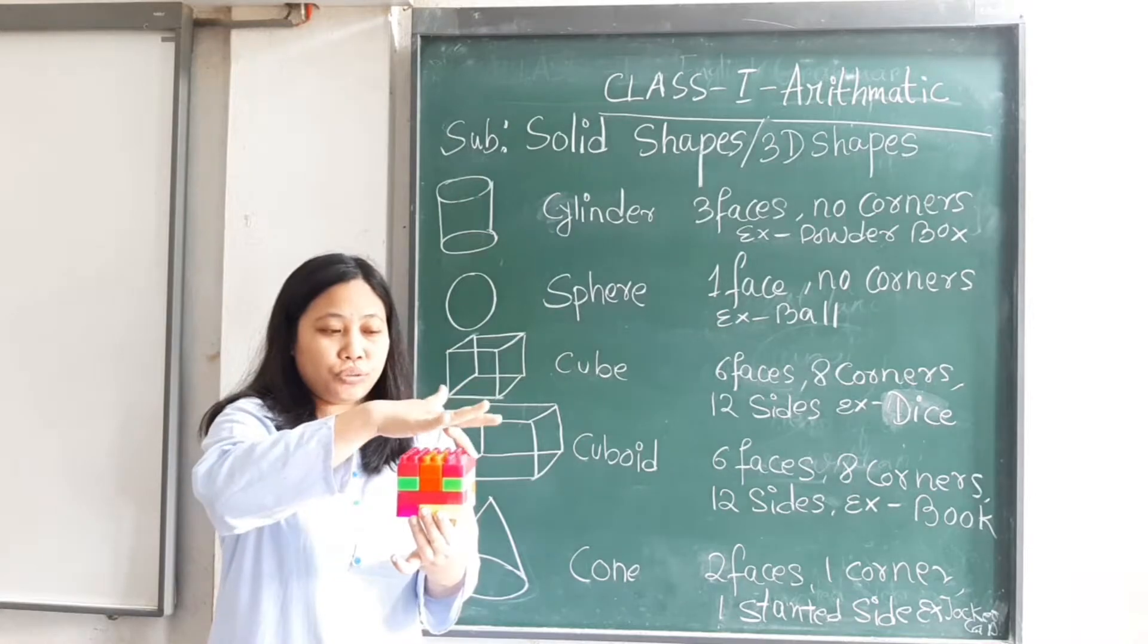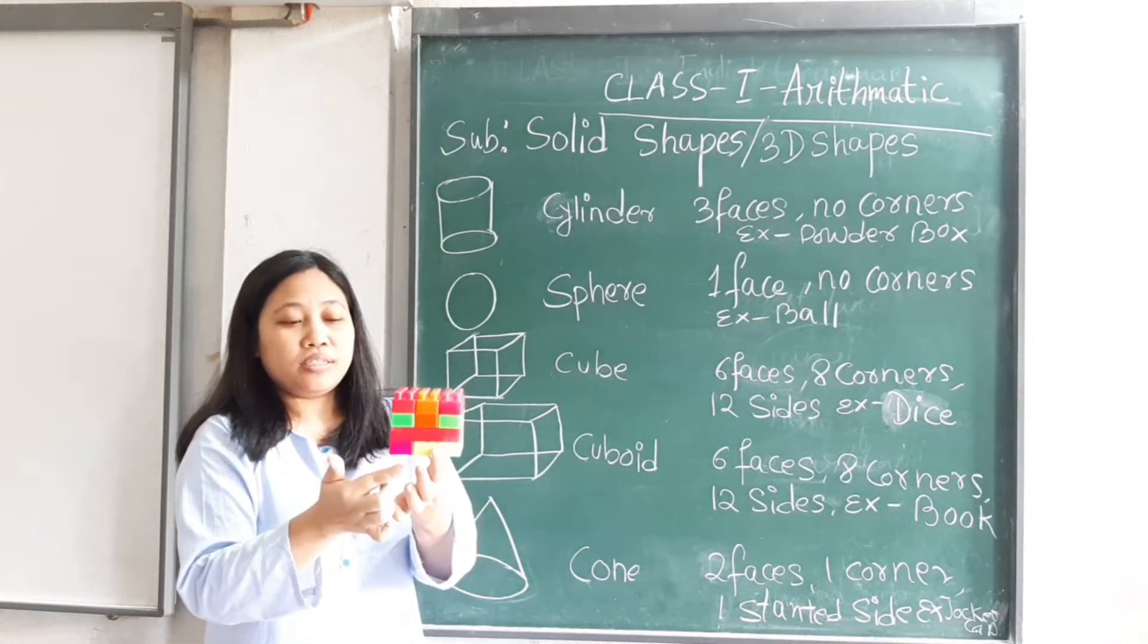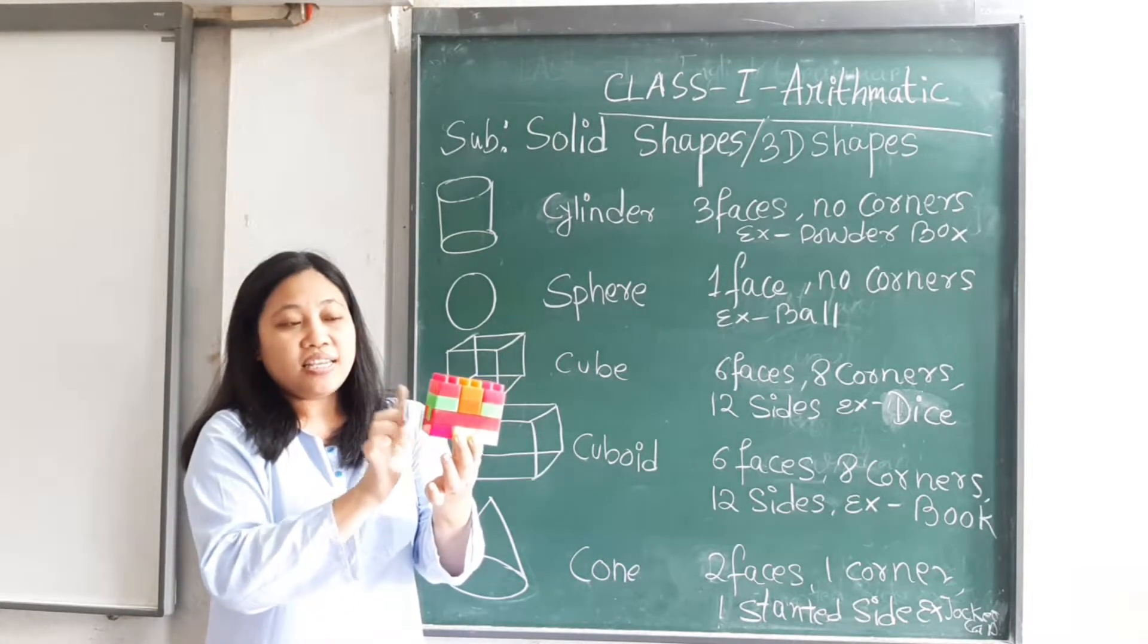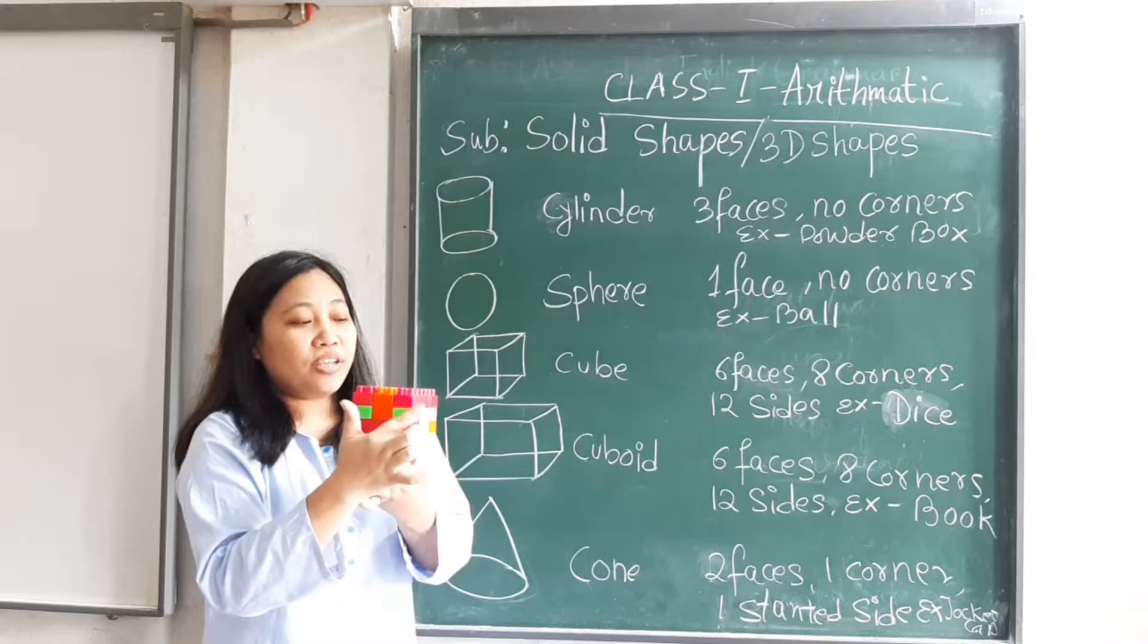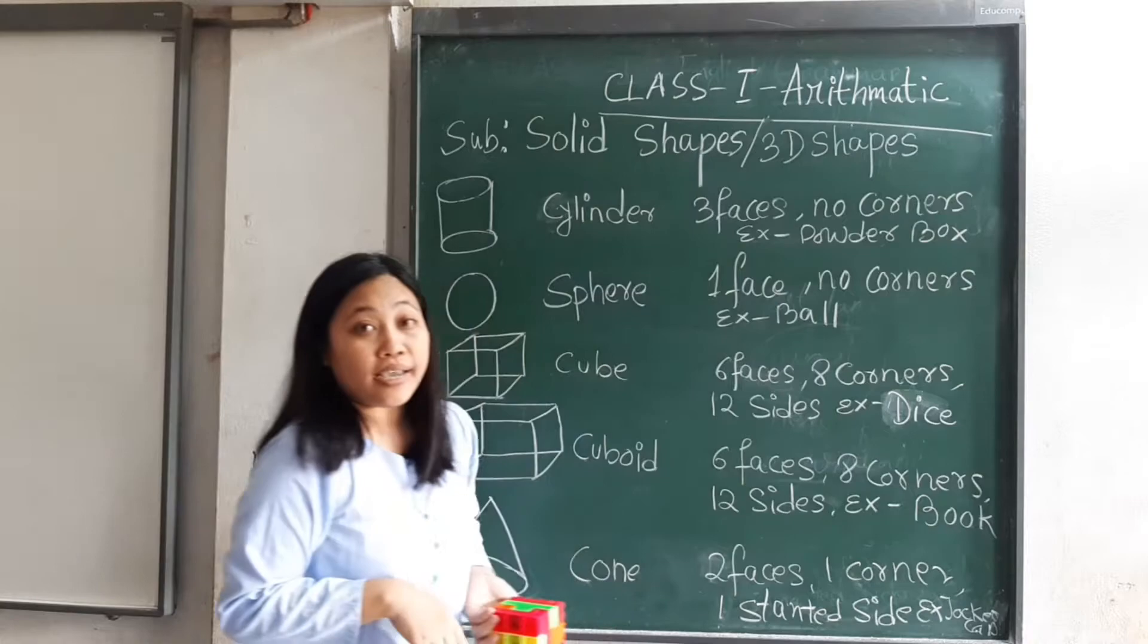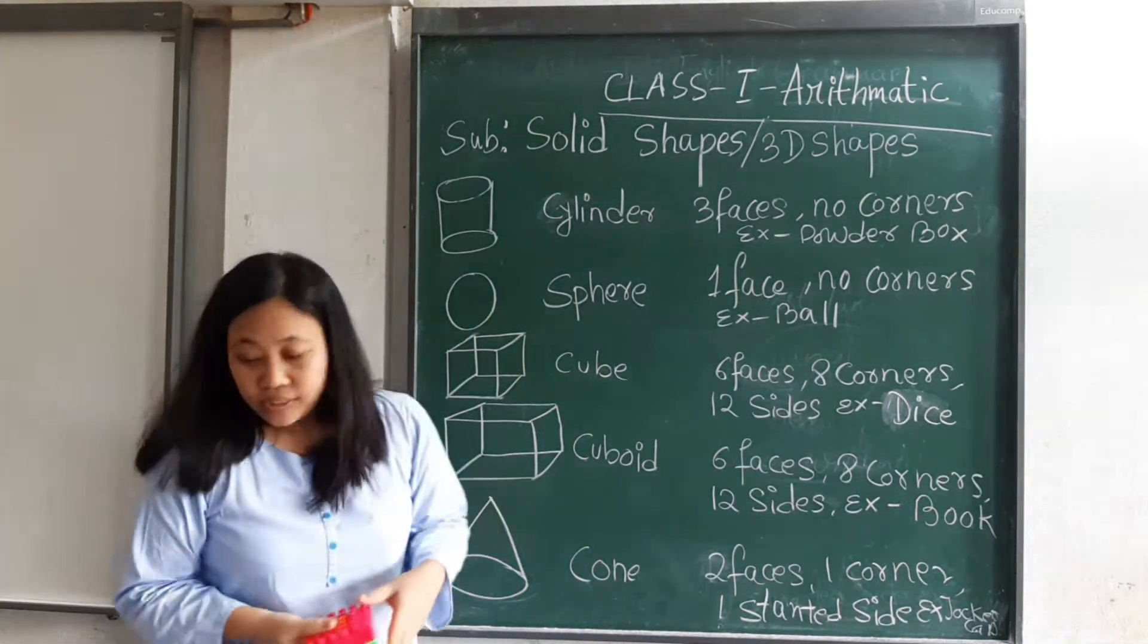Twelve sides: one, two, three, four, five, six, seven, eight, nine, ten, eleven, twelve. Now example of cube is ludo dice or ice cube.